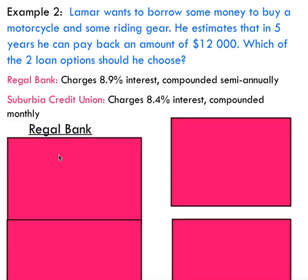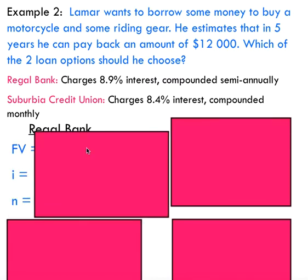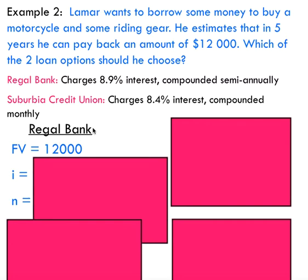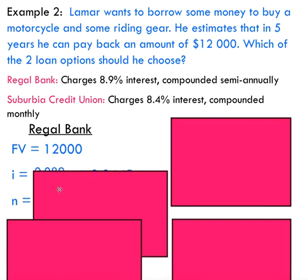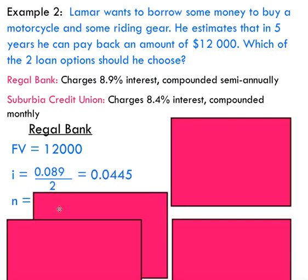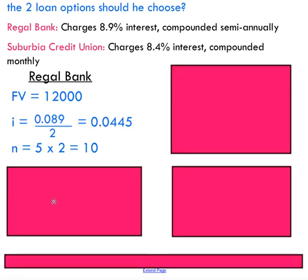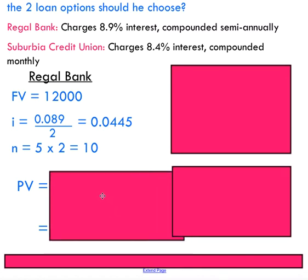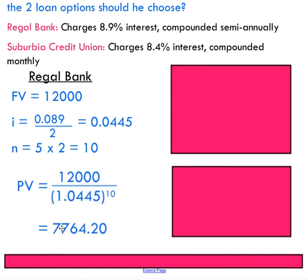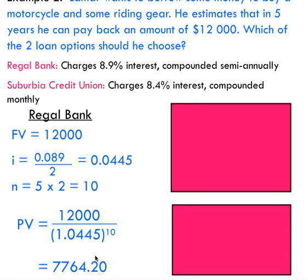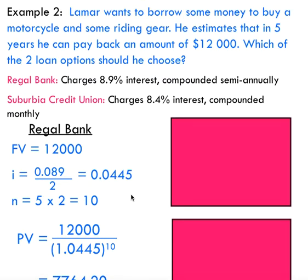Looking at the first option — Regal Bank — our future value is $12,000. The interest rate is 8.9%, compounded semi-annually, so we divide by two, and multiply our five years by two to get n equals 10. Substituting this into the formula, we end up with $7,764.20 — that's how much we'd be able to take out as a loan from this bank.